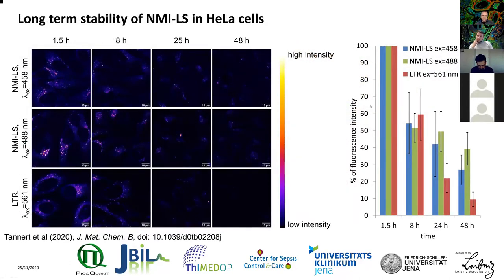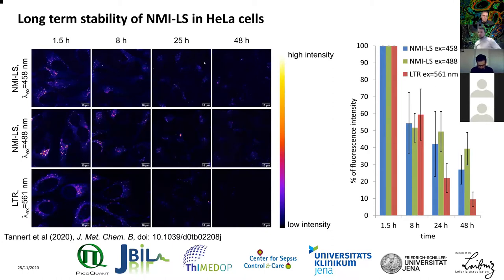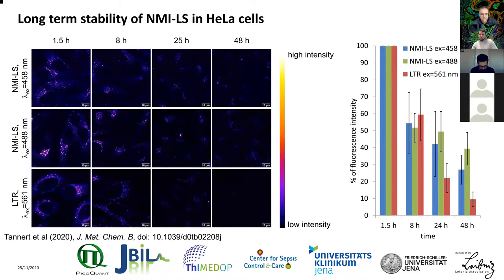We looked at dye stability within cells and compared it to the commercial LysoTracker. After labeling, we monitored intensity decrease over time at two excitation wavelengths. At longer time points — one or two days — the commercial dye is almost completely gone, while our dye is still clearly visible, even though intensity decreases. This is important if you want to monitor longer processes in cells, for instance the uptake of bacteria into lysosomes and how they behave over time.